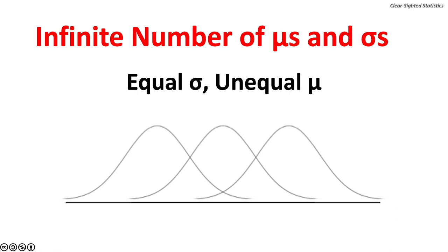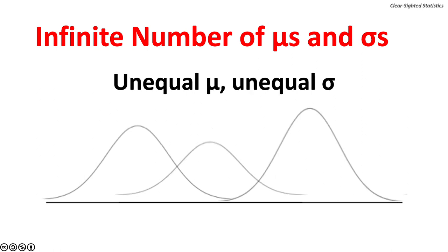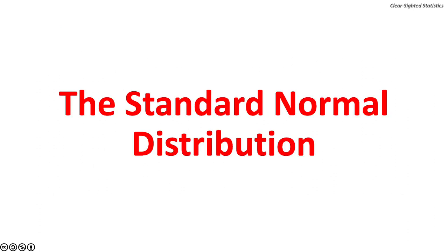Because the standard deviations are equal, the peaks for all three curves have the same height. The population means place the curve on the x-axis. Here are three normal curves with unequal population means and unequal population standard deviations. Let's turn to the standard normal distribution.